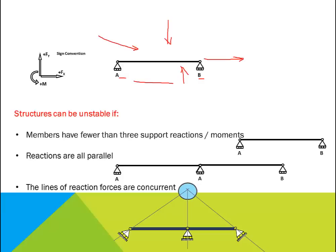If a beam or a structure is externally unstable, additional supports need to be added before it is worth spending time on structural analysis and design. At the beginning of any structural analysis, the structure needs to be analyzed for determinacy — to decide what method of analysis to use — and for stability, to check that the arrangement of supports is adequate to prevent the structure from moving. Structures can be unstable if members have fewer than three support reactions, if the reactions are parallel, or if the lines of reaction forces are concurrent and all meet at one point.